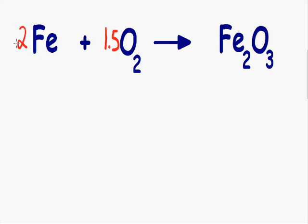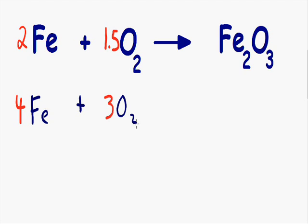I'm going to multiply both sides of the equation by two. Let's start with the iron — we have two molecules of iron. Two times two is equal to four, so now we have four molecules of iron. Now for the oxygen: we have one-and-a-half molecules of oxygen. One-and-a-half times two gives us three molecules of oxygen. And whatever you do to one side, you need to do to the other side, so we multiply the right side by two. We had one molecule of rust — one times two is equal to two, so now we have two molecules of rust on the right-hand side.